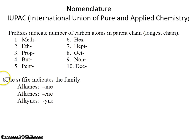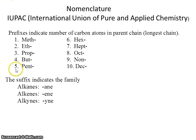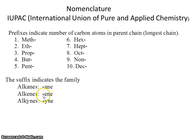As a review, the prefix indicates the number of carbon atoms present in the parent chain — the parent chain being the longest chain. For example, the prefix 'meth' means one carbon, 'pent' means five carbons, and 'oct' means eight carbons. Additionally, you can tell quite a bit from the ending of the name: it's an alkane if it ends in -ane, an alkene if it ends in -ene, and an alkyne if it ends in -yne. And once again, these correspond to single bonds, double bonds, and triple bonds.